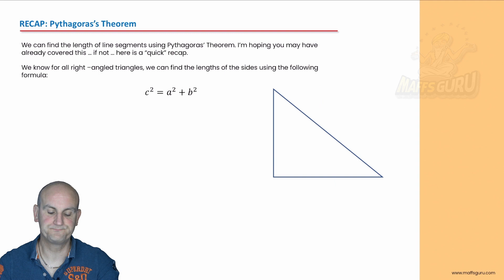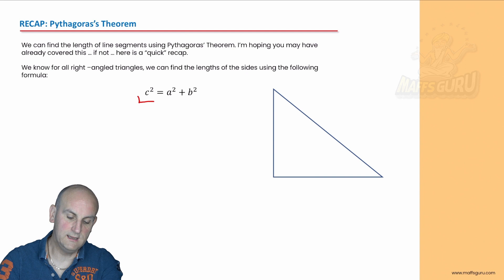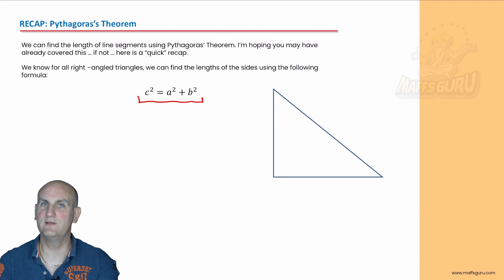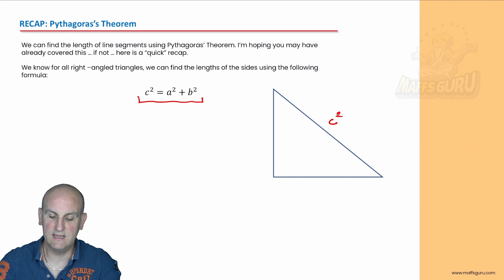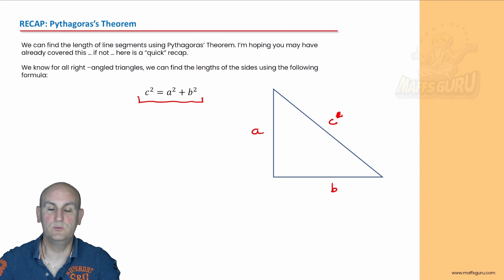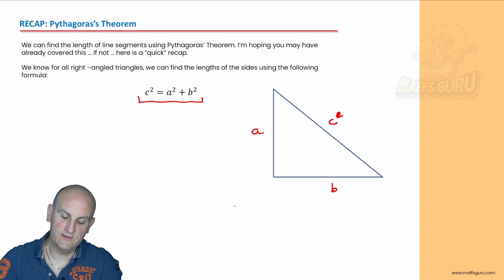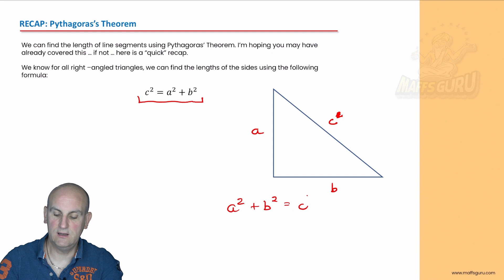Now for a recap on Pythagoras' theorem. To find the length of a line, we're going to use Pythagoras' theorem, which is c² = a² + b². The c² value is the hypotenuse. These other sides are a and b, and it doesn't matter which way around. If I take the a value squared and add it to the b value squared, I get c squared. If I had sides of 3 and 4 and wanted to find c, then c = √(3² + 4²) = √(9 + 16) = √25 = 5.